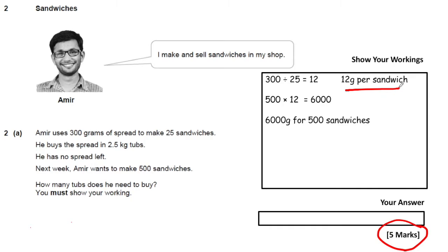Because we're looking at the smaller unit, if you look at my conversion factors video, it shows you that with a smaller unit you divide by the conversion factor to get kilograms. So 6,000 divided by the conversion factor — which is 1,000 grams per kilogram — equals 6. That's 6 kilograms of spread needed to make his sandwiches.